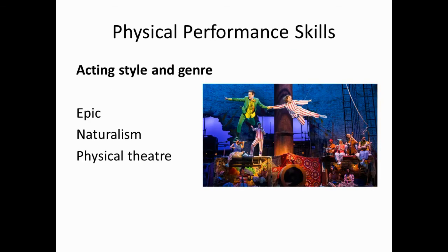In order to convey the style and genre to communicate creative intentions clearly, performers need to make performance decisions on how to convey physical skills to the audience. For example, in epic theatre, facial expressions and gestures are exaggerated and there are moments of comedy. In naturalism, everyday movement is used, and in physical theatre, uses physicality.